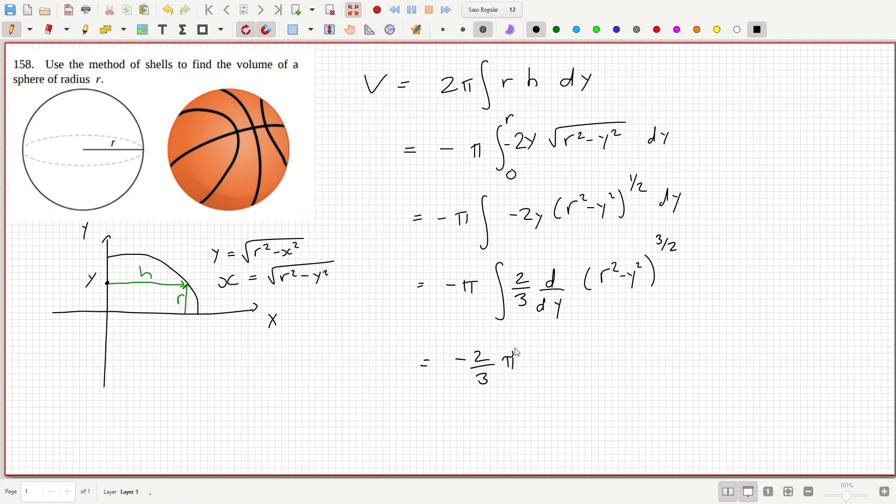That's only going to be for half a sphere though, it's double the answer. R squared minus y squared three over two, zero to r. So you put in r you get zero, you put in zero you'll get the r squared, so that would be two, so that's two thirds pi.